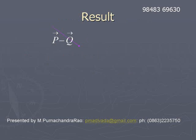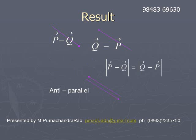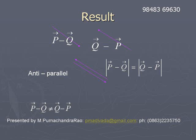If we compare p̄ minus q̄ and q̄ minus p̄, we notice them to be of the same magnitude but opposite in direction. Such a pair of vectors are called anti-parallel vectors — if the directions are opposite and magnitudes are equal. So p̄ minus q̄ is not equal to q̄ minus p̄, but the magnitude of p̄ minus q̄ equals the magnitude of q̄ minus p̄.